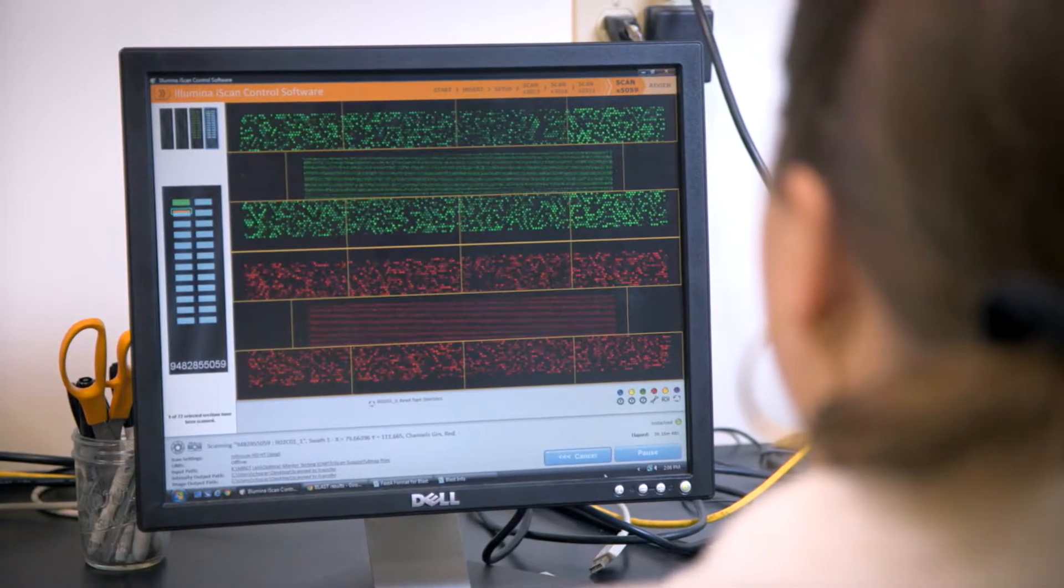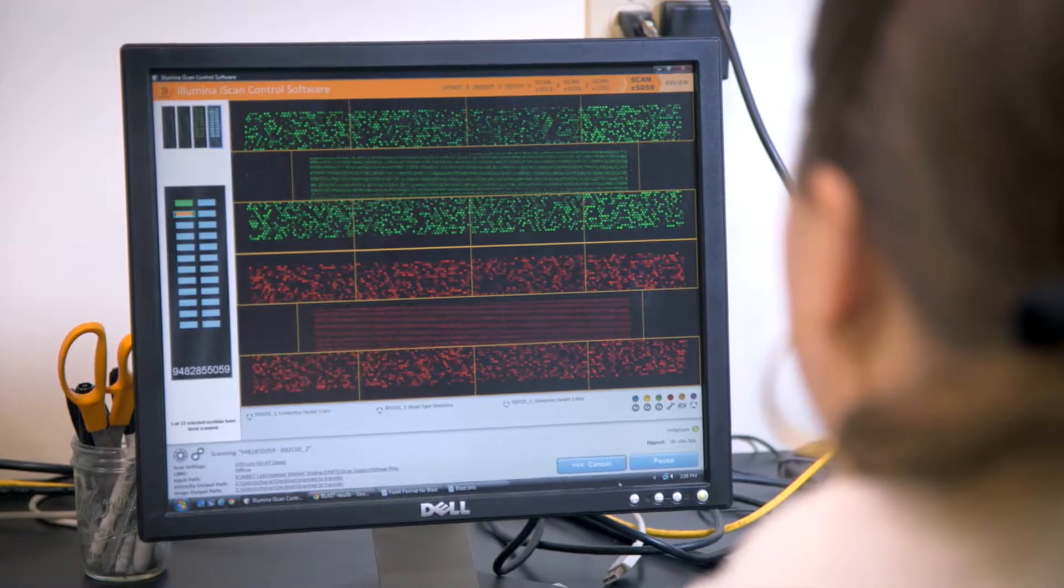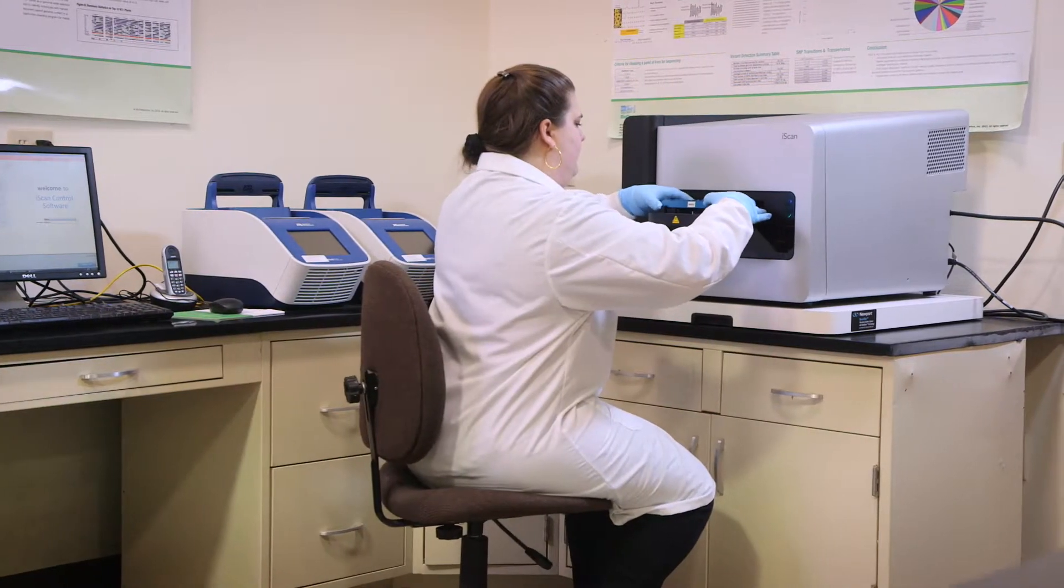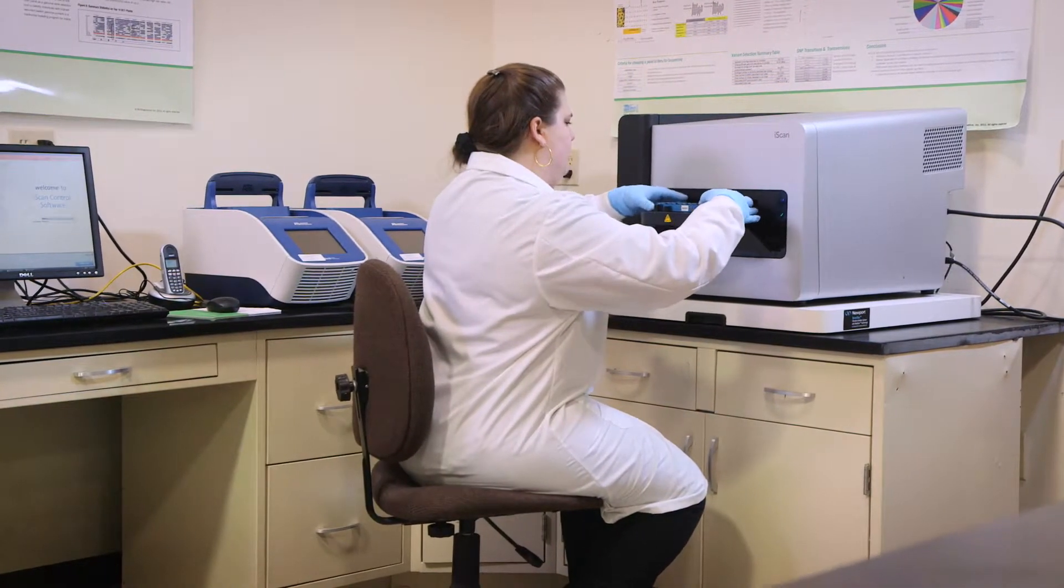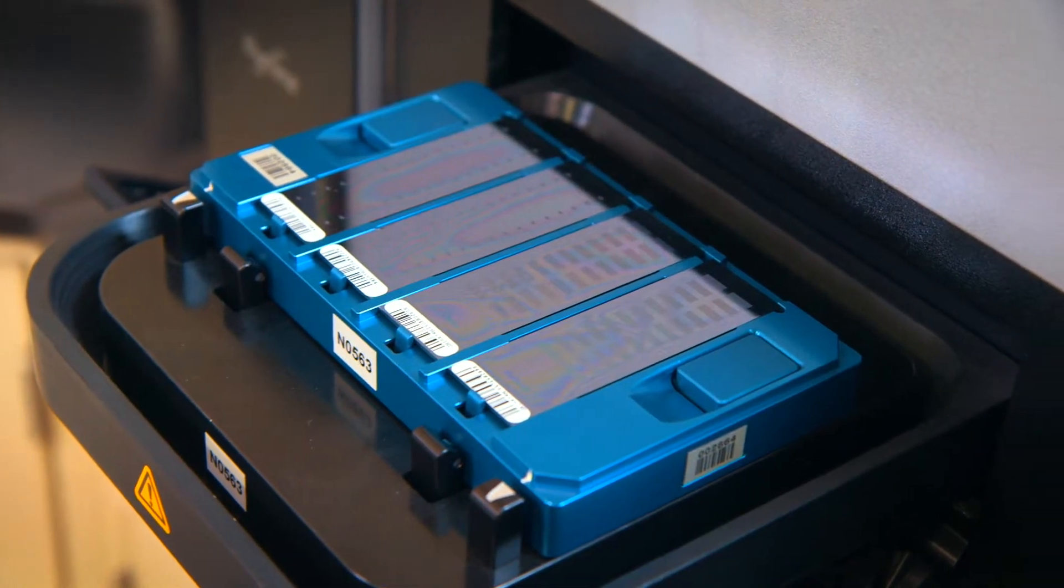Based on customer needs, samples can be run on our high marker throughput platform using Illumina's iScan technology. This produces millions of genotyping data points good for any association mapping or genomic selection strategy.